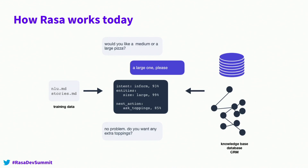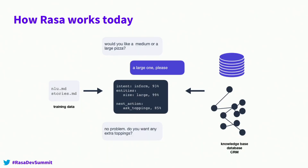How does Rasa work today? The first part, which used to be called Rasa NLU — now merged into one library — takes a message like 'a large one, please' and turns that free unstructured text into structured data. What that means typically is identifying the intent, putting it into one of n classes you've predefined, and then extracting entities you can use to run a query — like in this case, the fact that the size of the pizza is large.